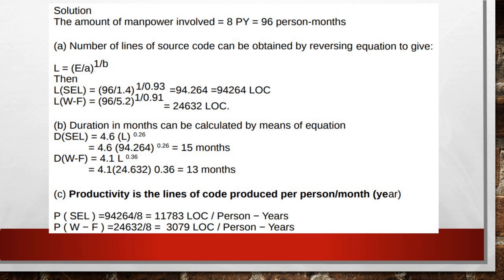Once we find the number of lines of code L, we can calculate the duration for both SEL and WF methods. Substituting the values of A, B, and L into the duration formula: the duration is 15 months as per the SEL method, and 13 months when using the Watson-Felix formula.